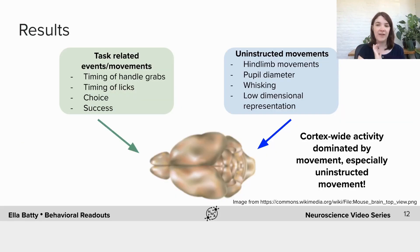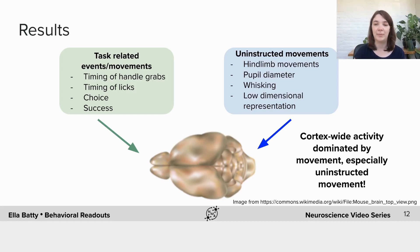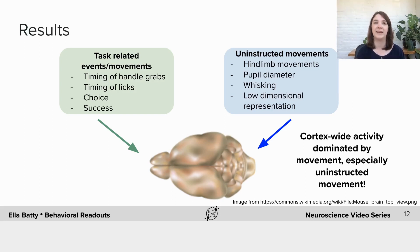So in this study, they were also recording from the brain while the mouse was doing this task. They use something called wide field imaging — and you'll actually hear from Anne Churchland in a different video about wide field imaging and see a tour of her lab, so I'm not going to go into details on that. They record activity from the brain and relate it to all of these behavioural readouts. And they find that the cortex-wide activity is really dominated by movement, especially the uninstructed movements — all the movements not related to the task. This shows us how important capturing all these behavioural readouts are, because they're really influencing neural activity in the brain.